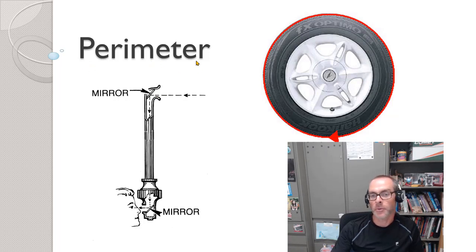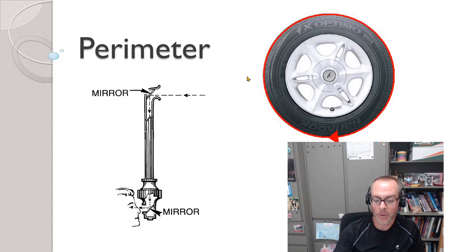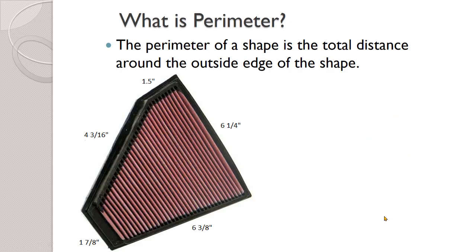And meter, as we've seen in other places, is a unit of length or to measure. So perimeter means to measure around, and that's why perimeter is defined as the total distance all the way around the outside of a shape.